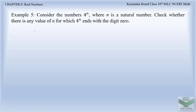Let us start with example number 5, which says: consider the natural number 4 power n where n is a natural number. Check whether there is any value of n for which 4 power n ends with the digit 0. We have to find the value of n such that after substituting n, we obtain a number whose last digit must end with 0.